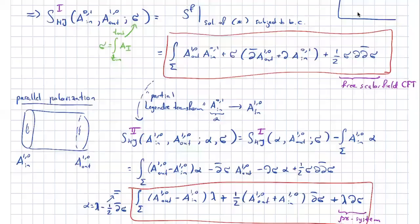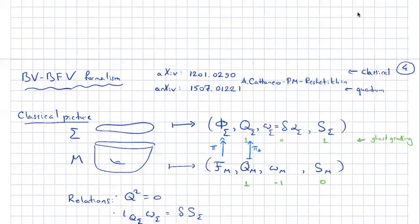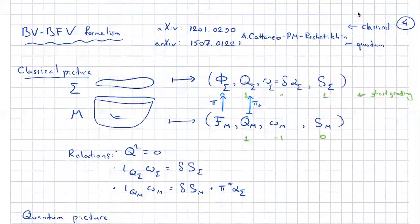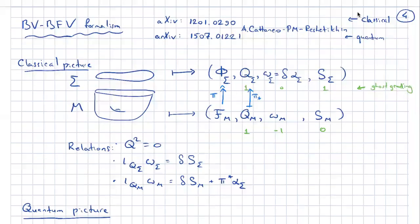Now we are transitioning to the quantum side. I need to just keep this part short. There is a program called the BV-BFV program. BV stands for Batalin-Vilkovisky and BFV stands for Batalin-Fradkin-Vilkovisky. BV is an enhancement of BRST formalism for gauge theories, and BFV is its Hamiltonian version.